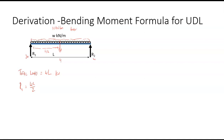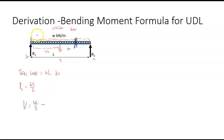To get the shear force, I pick any point along the beam. Looking at everything to the left of that point, the shear force equals the reaction force wL over 2, minus the load acting over the distance x to that point. If w is kilonewtons per meter, the load over that distance is w times x, and it acts at a distance x over 2. So the shear force is wL/2 minus wx.